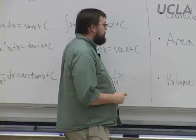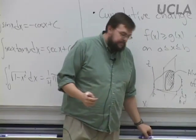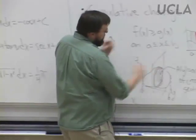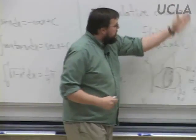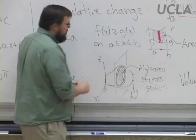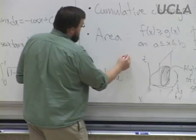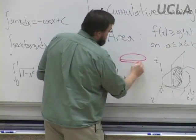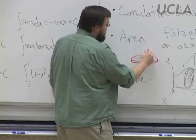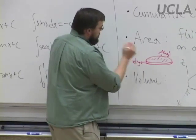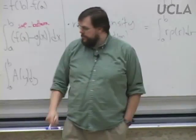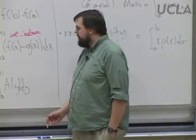Closely related to area is volume. We have some three-dimensional object. The way I'm going to think about finding the volume of this blob is, again, the same thing as area — I slice it into little tiny pieces. I essentially get a very thin piece that looks a lot like a squashed cylinder. The volume of that thin slice is A(y) dy — that's the area on top times the width. To find the volume of the whole thing, I add it up from A to B.